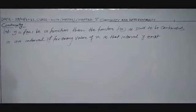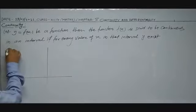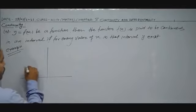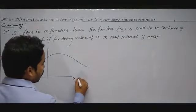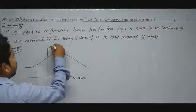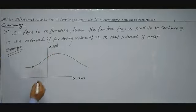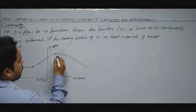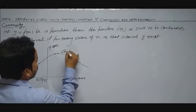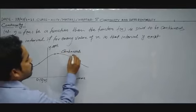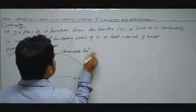Let us see the example of a continuous function. Consider a graph with x-axis and y-axis. This is a continuous curve with intersection at origin (0, 0). This curve is continuous — it is a continuous function.